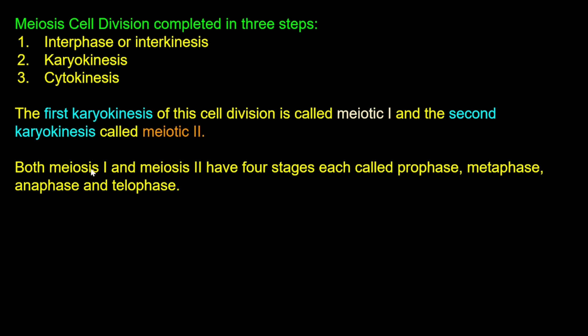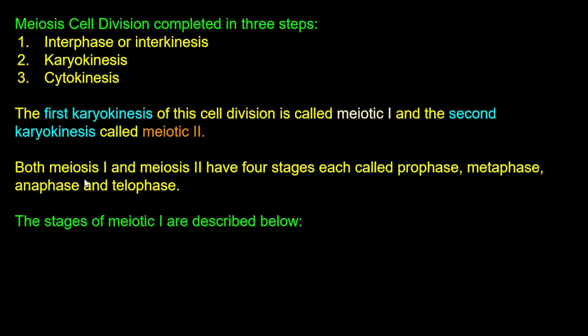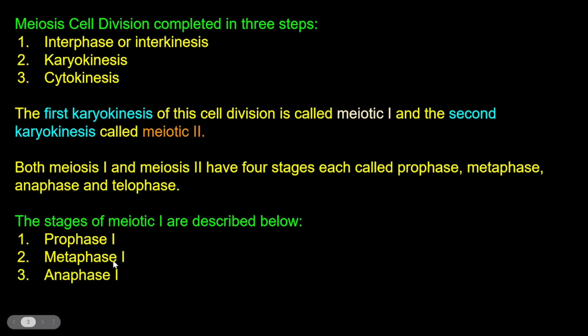Meiosis first has four stages and meiosis second has four stages, just like mitosis has four stages: prophase, metaphase, anaphase, and telophase. So meiosis first has prophase first, metaphase first, anaphase first, and telophase first.